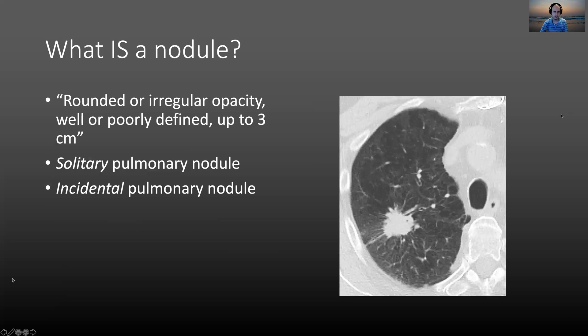So what is a pulmonary nodule? A nodule is defined by the Fleischner Society as a round or irregular opacity, well or poorly defined, up to three centimeters — so it's not a very specific definition. Generally, we're thinking about a roughly oval- or round-shaped lesion that's isolated in the lung, with well or ill-defined margins, but it's a discrete entity.